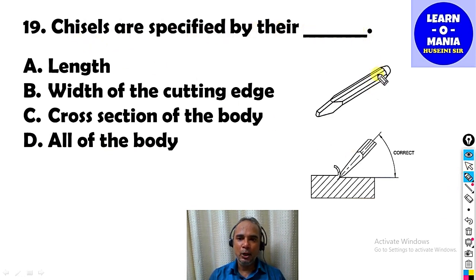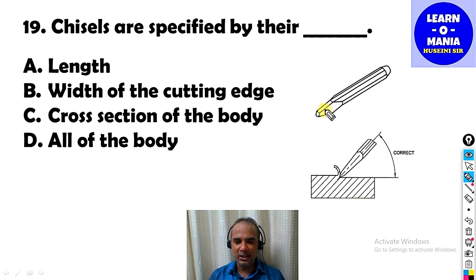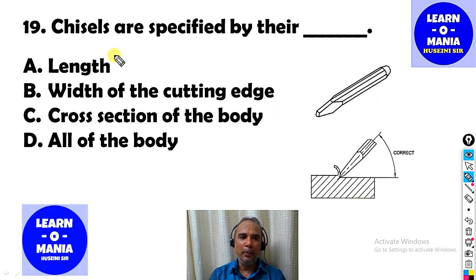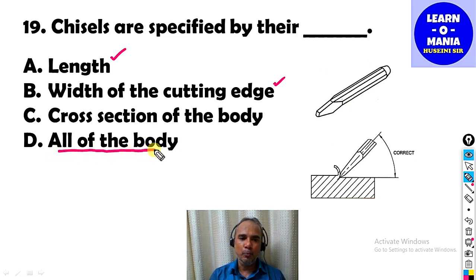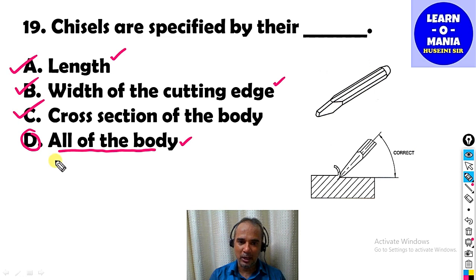Our next MCQ: Chisels are specified by the dash. A chisel is classified on the basis of: its length, the angle of its cutting edge, the cross-section of the body (shape of the cutting edge), and all of the above. The answer is option D — chisels are specified by all of these characteristics.